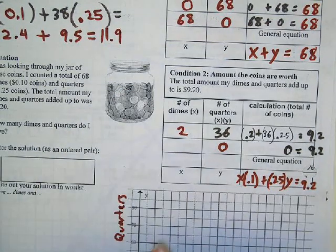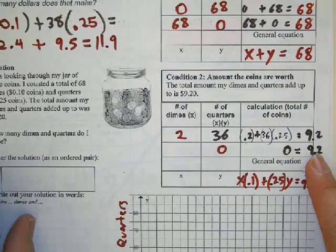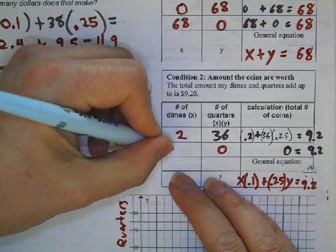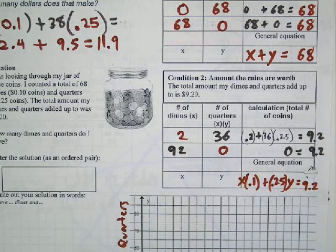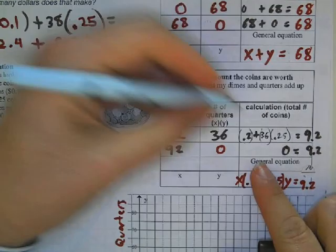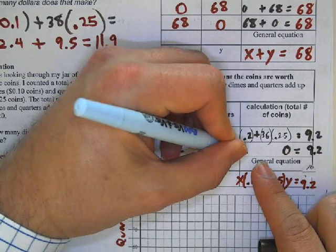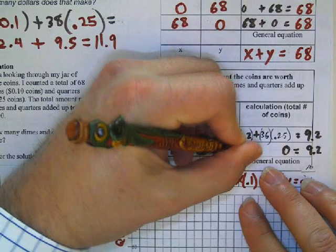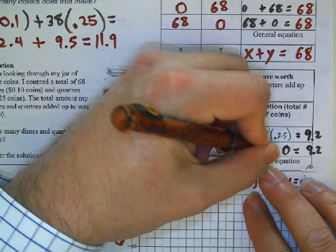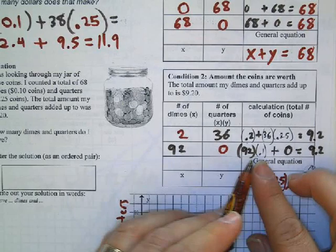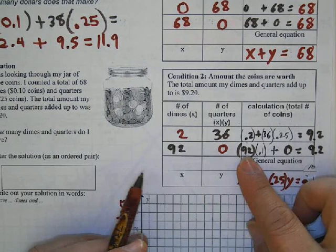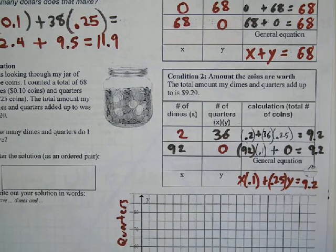The next part is a little easier. What happens if I have no quarters? So I have nine dollars and 20 cents all in dimes. That means I'm going to have to have 92 dimes. How did I get that number? If I have 92, and we know a dime is worth 0.1 of the dollar, if I have 92 dimes, multiply it by 0.1, we're going to end up with 9.2.